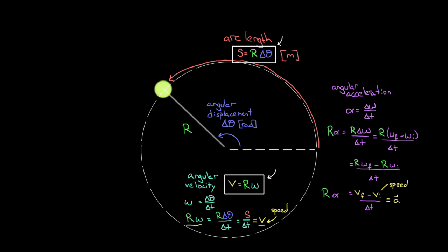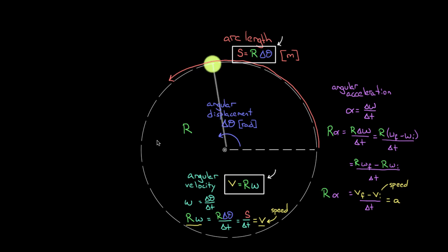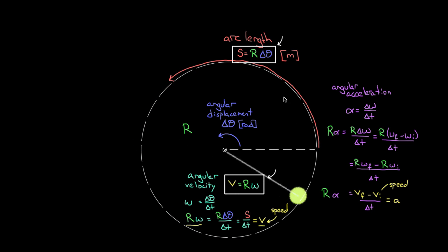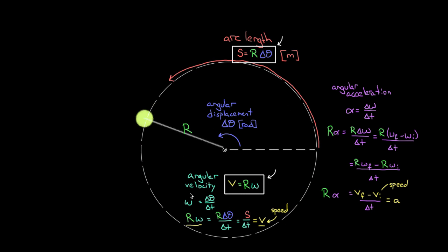There are two ways to accelerate: change your speed or change your direction. The acceleration we just found doesn't account for acceleration from changing direction. Even if the ball isn't speeding up or slowing down, going in a circle means the velocity direction is changing, so there must be a centripetal acceleration — and a centripetal force (in this case, tension).